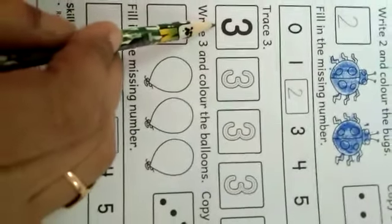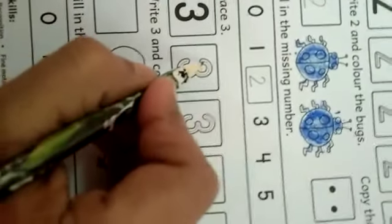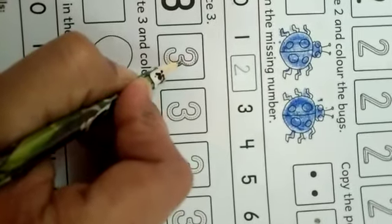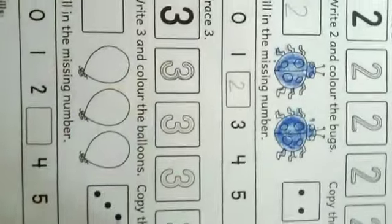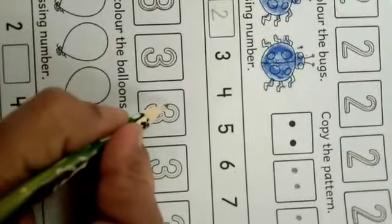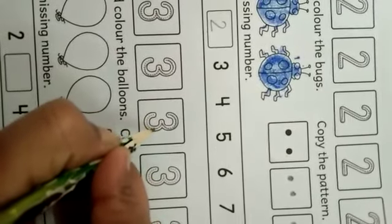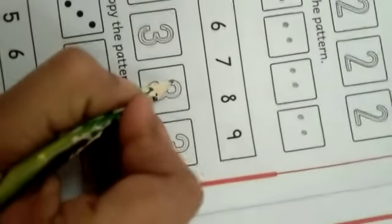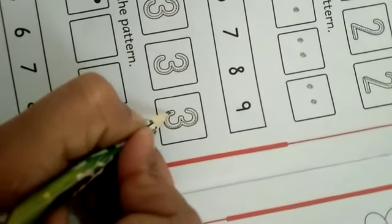So now let's come to number 3. Which is this number? 3. So what will be the formation of 3? Start from the top and come down slowly like this. So this is the correct formation of 3. This is the correct formation of 3. So we will trace all the 3 like this. Done.